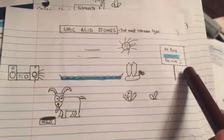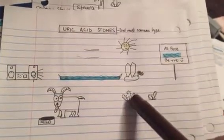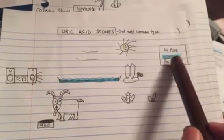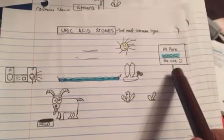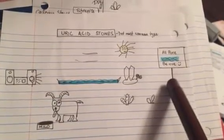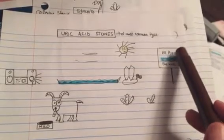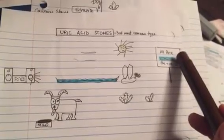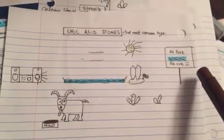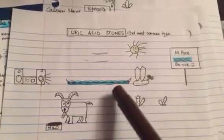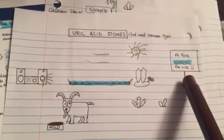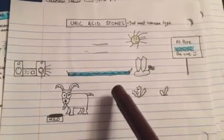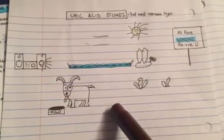Treatment is shown as a billboard in the desert reading 'All Pure Water Be Positive': Allopurinol is shown by 'All Pure,' the water symbol shows hydrating the patient, and 'Be Positive' means alkalinize the urine. This is the quick mnemonic about uric acid stones.